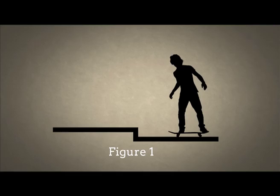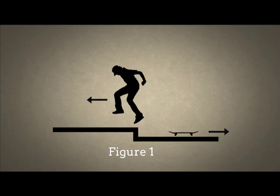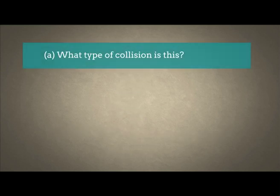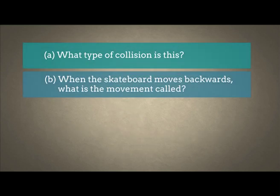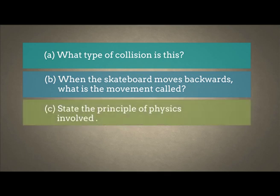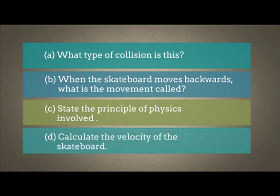Let's try another question. Figure 1 shows a boy jumping off a stationary skateboard onto the kerb. The skateboard moves backwards. A: What type of collision is this? B: When the skateboard moves backwards, what is the movement called? C: State the principle of physics involved. D: Calculate the velocity of the skateboard.